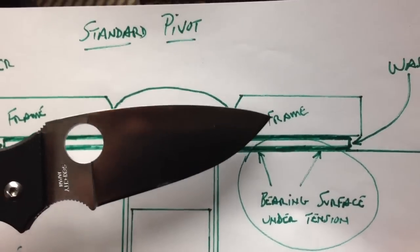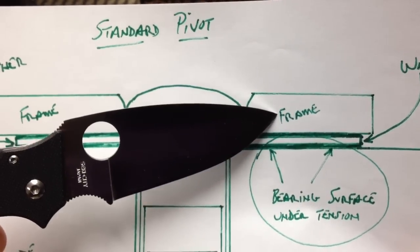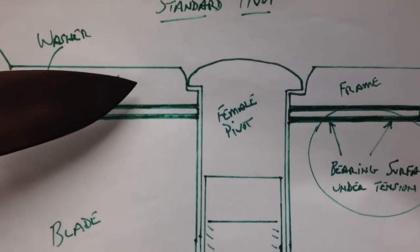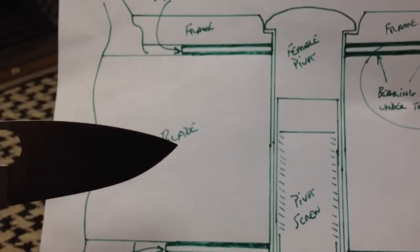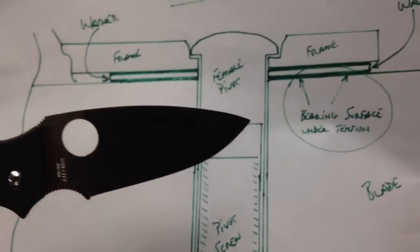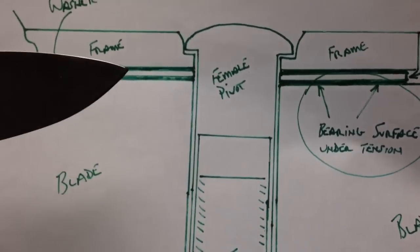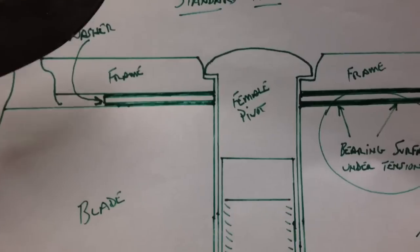What we have are on either side a frame or a liner. They can be used interchangeably for our purposes. And then we have the blade on either side of the pivot. And this is a cross section of the knife right down the center of the pivot.